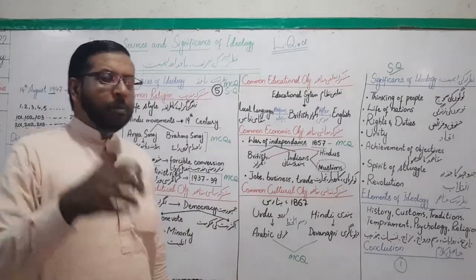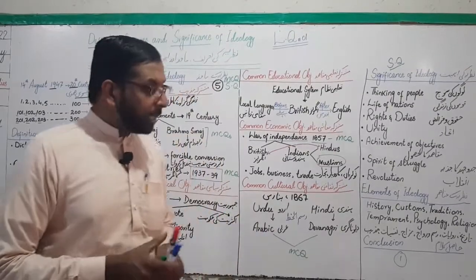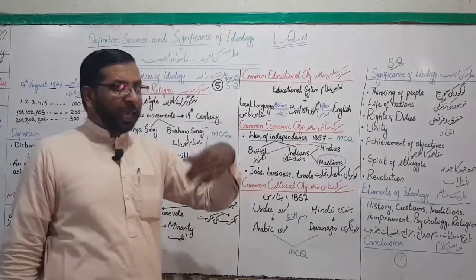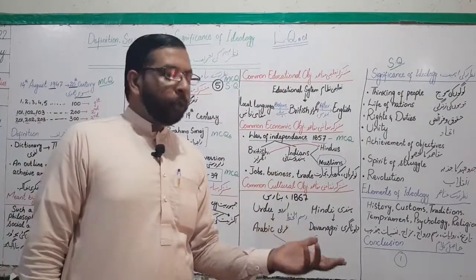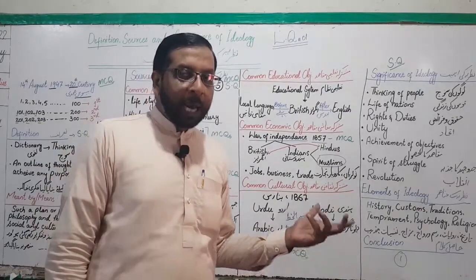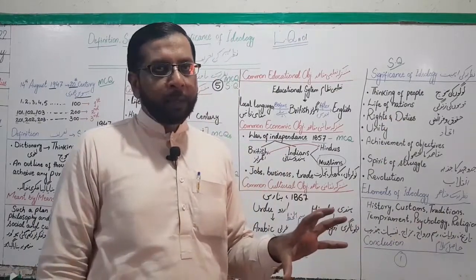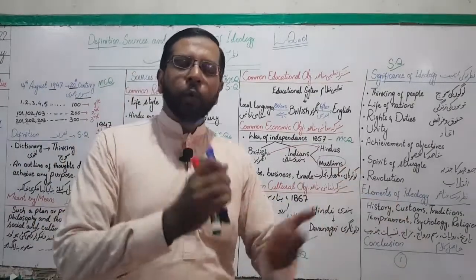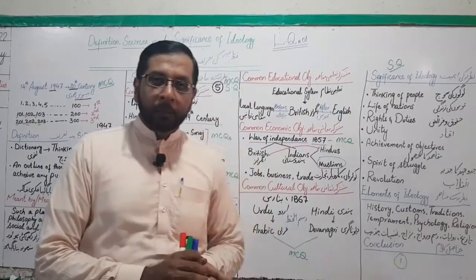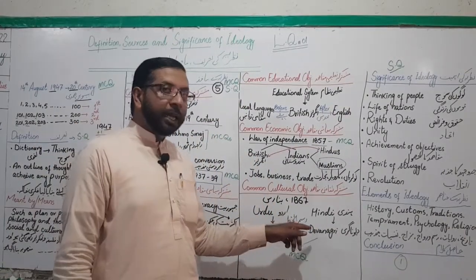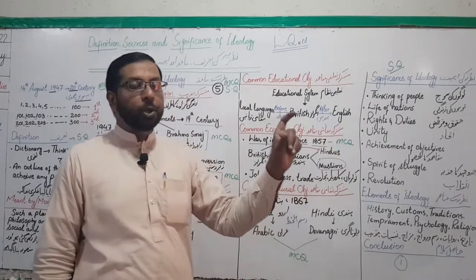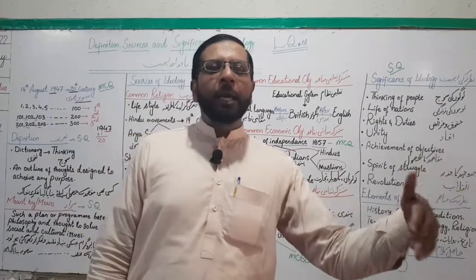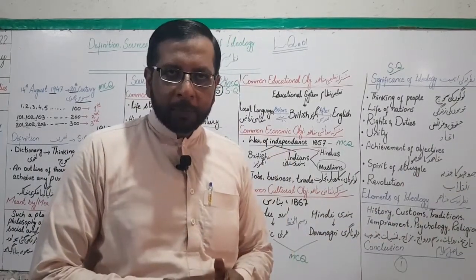Is mauqe par Musalmano ne yeh socha ke sirf is wajah se ke Arabic Musalmano ki mazhabi zubaan hai aur is ke andaaz mein yeh zubaan likhi jati hai, Hindu isko change karna chah rahe hain — halankeh yeh Hindustan mein hi bani zubaan hai. To yeh kaise mumkin hai ke woh Musalmano ko barabari ki satah par unke haqooq faraham kar den? Isi mauqe par Sir Syed Ahmad Khan ne Muslims ko ek separate nation declare kiya tha — Two Nation Theory ki term is mauqe par saamne aayi.